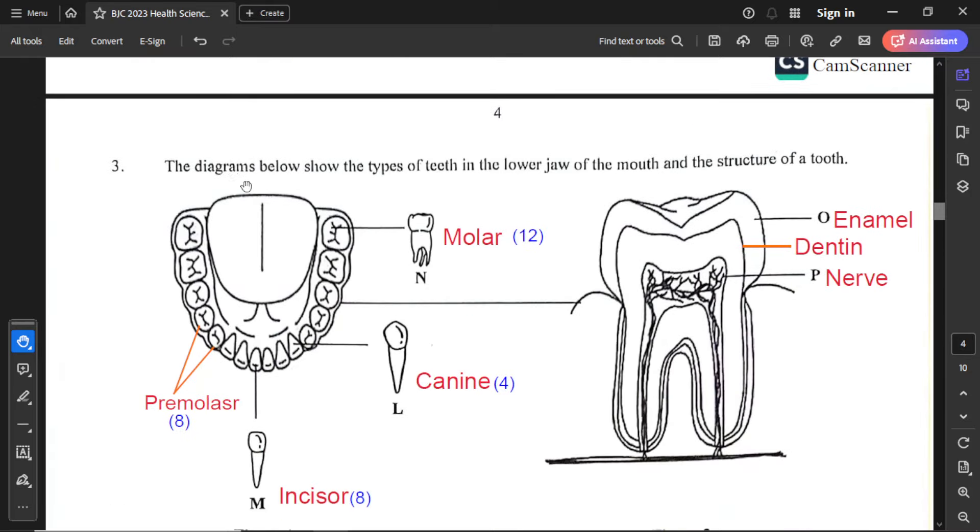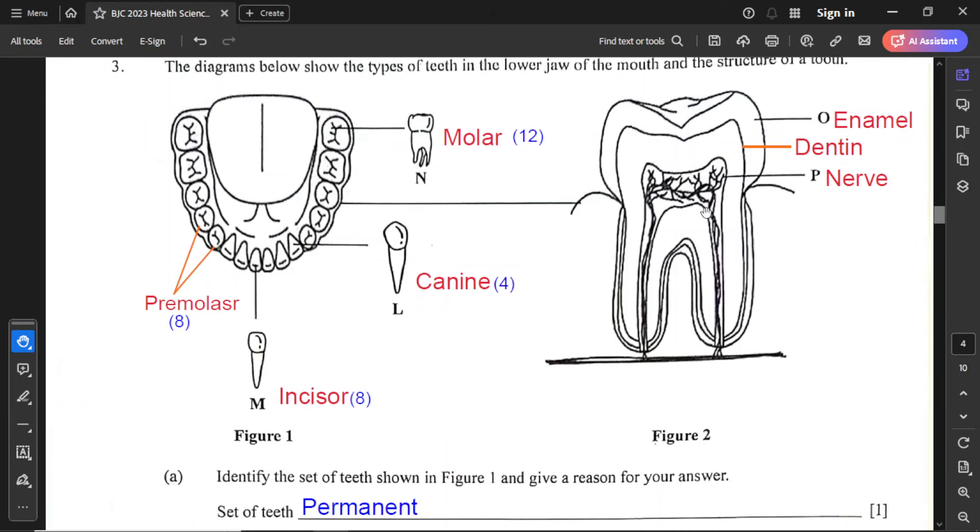For question number 3, diagrams below show the types of teeth in the lower jaw of the mouth and the structure of a tooth. I have labeled these with the numbers of each type of tooth present. We have the incisor and we have eight of those. We have canine, four of those in total. We have premolars, eight of those in total. And then we have molar. The tooth structure shown has enamel labeled O, dentine, and structure P is pointed to the nerve. The nerve is found in the pulp, and blood vessels or capillaries are found in the pulp cavity as well.